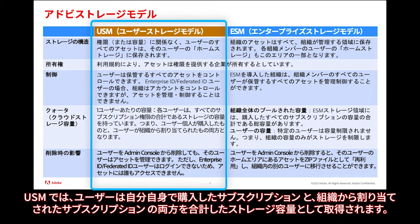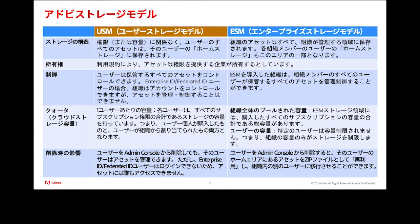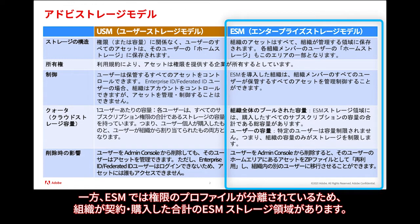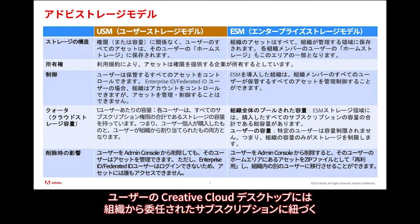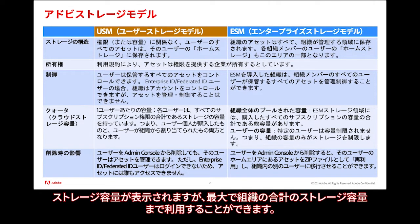In USM, you get a single user storage area that is the sum of all the user's subscription entitlements — both the subscriptions self-purchased by the user, as well as the subscriptions delegated to that user by any organization. Whereas in ESM, since the entitlement profile is separated out, the ESM storage area has a total quota for the org — everything the org has purchased. Users do not get a specific quota. In Creative Cloud Desktop, a quota is shown, but this is a soft quota, correlating to the subscription the user was delegated by that organization.